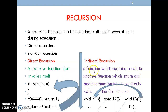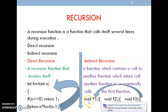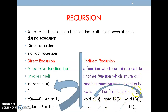Similarly, in indirect recursion, one function calls another function, then the second function calls the third function, and at the end the last function calls the first function. Like here: in the first function f1, we call f2; in f2, we call f3; and at the end, f3 calls f1. This is called indirect recursion.